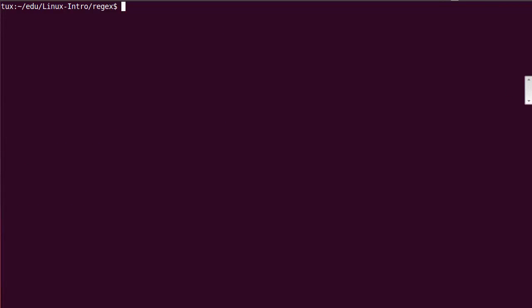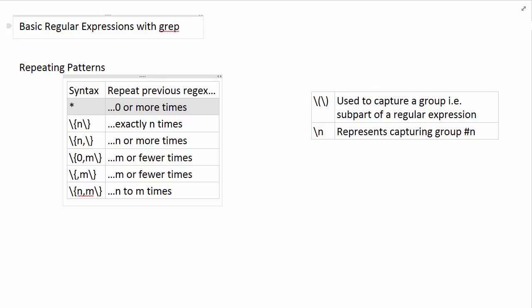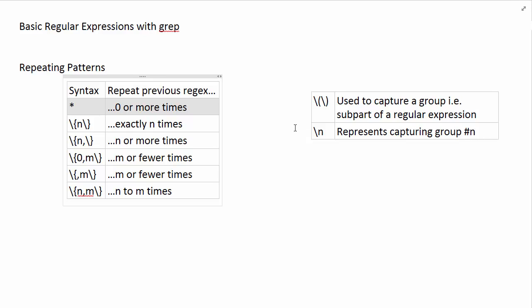This way of using capturing groups is also going to come in handy when you use a regular expression to replace things in a text file. You identify capture groups in your expression, and then when specifying the replacement string, you can use those capturing groups. We can't do that with grep since grep doesn't do replacement, but in other tools that support replacement with basic regular expressions, or in programming languages like Java or Python, capturing groups allow you to build more powerful replacement strings. That concludes this video — thank you for watching.